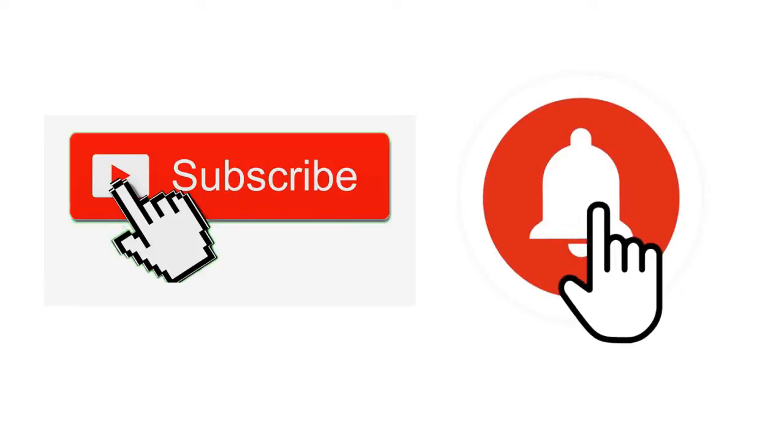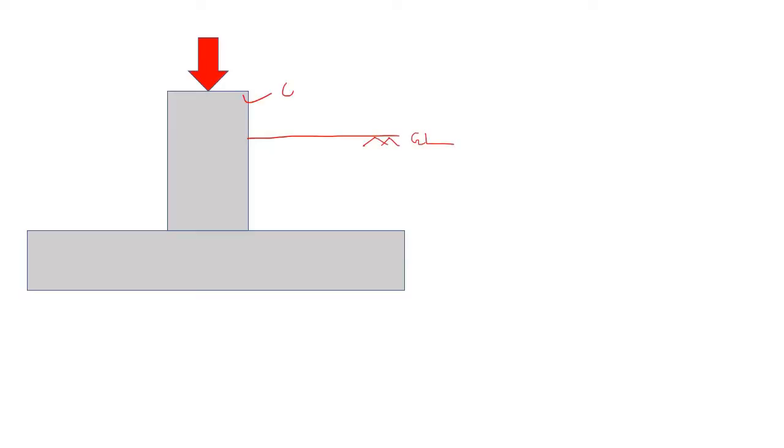Okay, so let's start. First, let's discuss about the isolated footing. Basically, any isolated footing looks something like this. If this is the ground level (GL) and if this is the column and if this is the load coming on the column, what will happen? The column will transmit this load to this bottom slab.